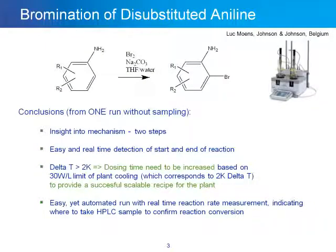The conclusions we can draw from this one run — where we did not perform any sampling and relied solely upon TR-TJ — are: the mechanism was two steps, and we could easily see the start and end points of the reaction. The delta T of 8 Kelvin was higher than the 2 Kelvin limit corresponding to 30 watts per liter of plant cooling capacity, meaning we could not successfully scale this reaction up into the plant as run.